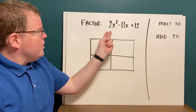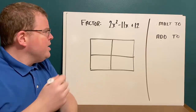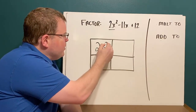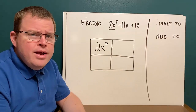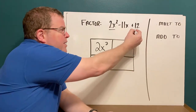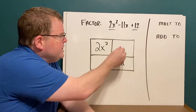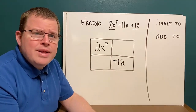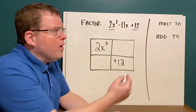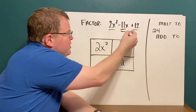We want to factor 2x squared minus 11x plus 12. The first thing we do is take what we have in the front, 2x squared, and put it in the top left part of the grid. Notice I have a 2 by 2 grid. The 12 at the end goes in the bottom right. Now I need to figure out what goes in these two middle boxes. I take my first and my last: 2 times 12. They multiply to 24. I need two numbers that multiply to 24 and add up to negative 11.